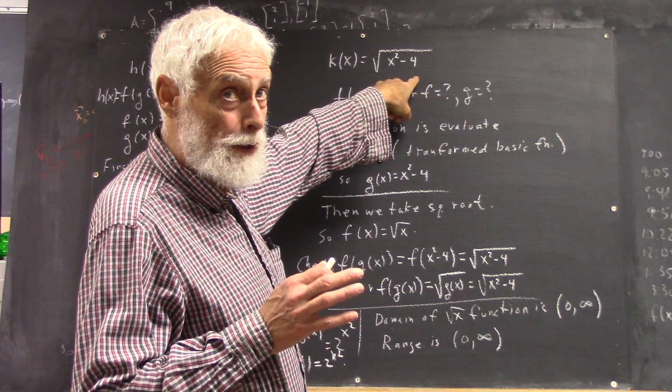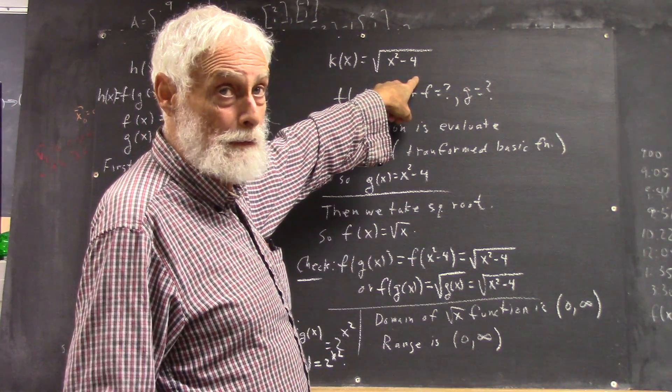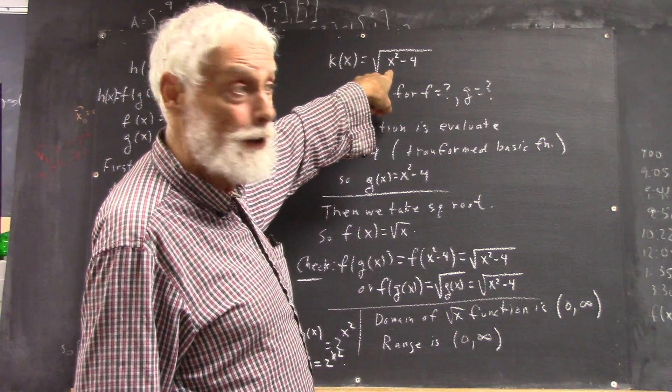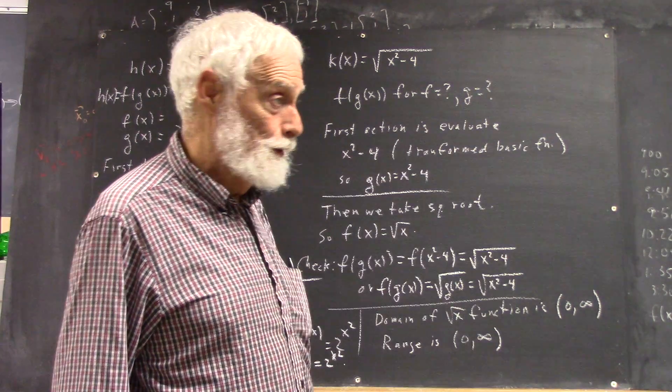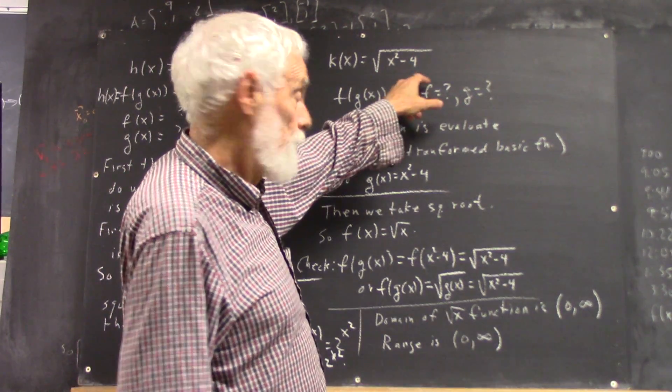Then it took a little while to get another one, but someone came up with, oh, negative 1 doesn't work either, does it? Negative 1 squared is going to be 1, you're going to get negative 3.